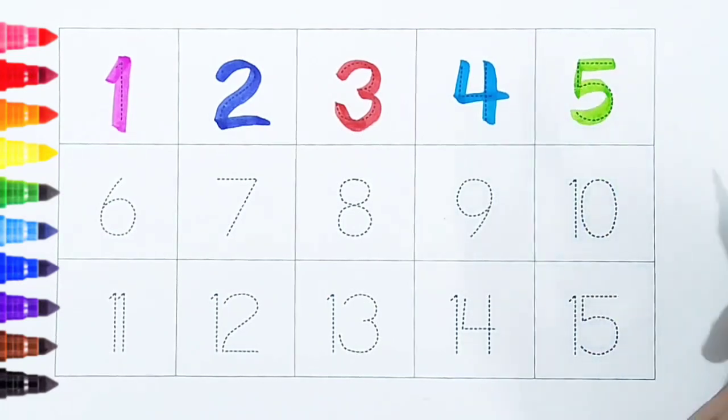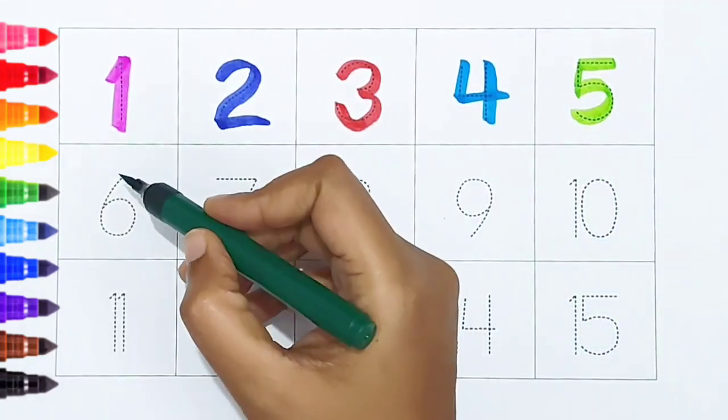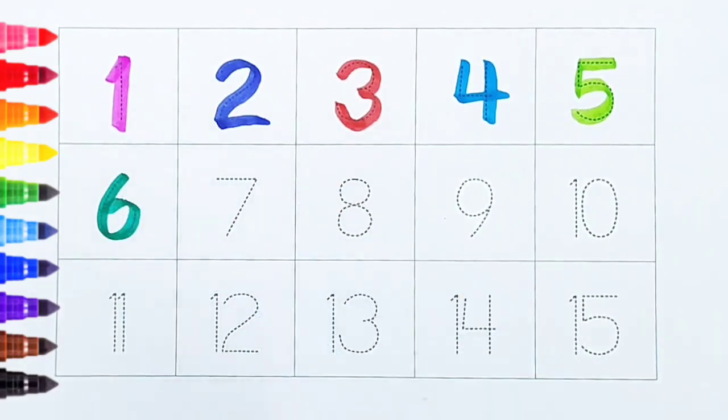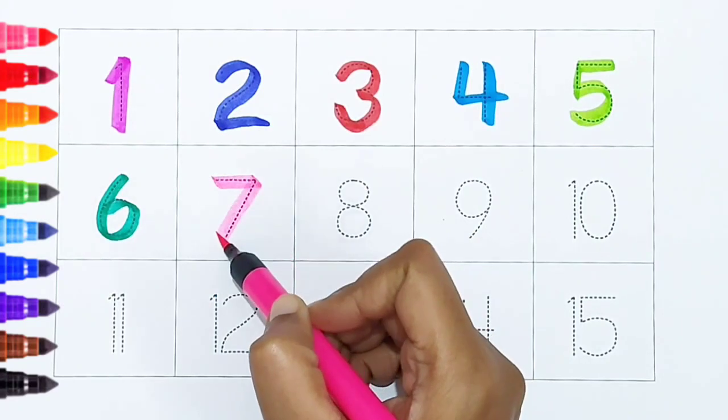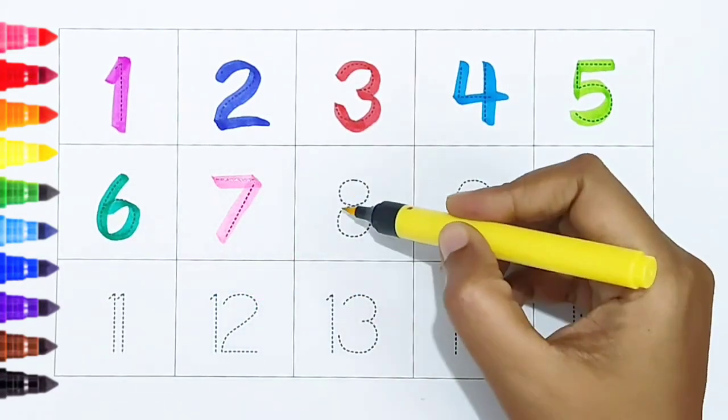Six, dark green color. Six, dark green color. Seven, light pink color. Seven, light pink color. Eight, yellow color.